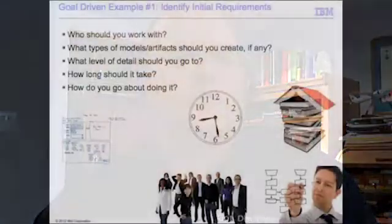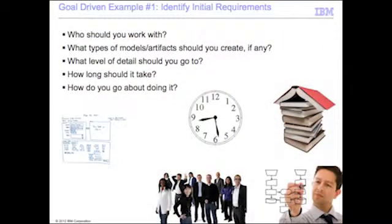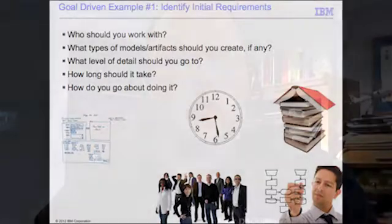What level of detail should you go to? That's another valid question. Some agile teams create very detailed requirements specifications. More commonly, they do just a stack of index cards and maybe some whiteboard sketches. Some teams have very slim requirements definitions — they might just have a list of goals and that will be good enough for them. So there are different levels of detail, each of which have advantages and disadvantages.